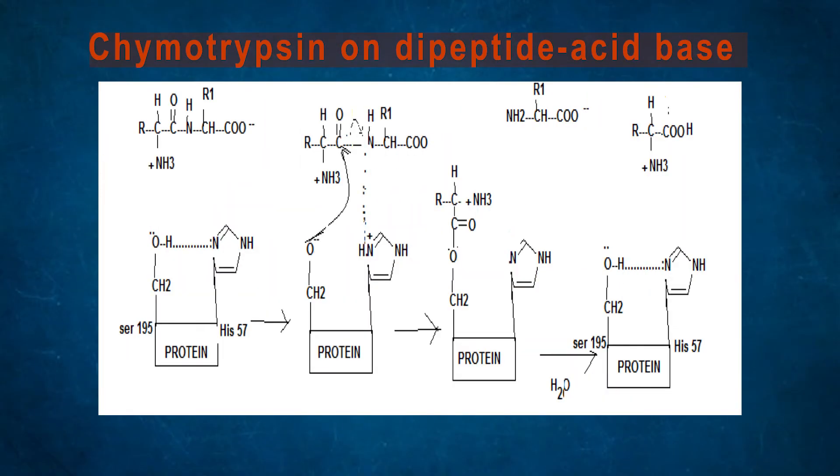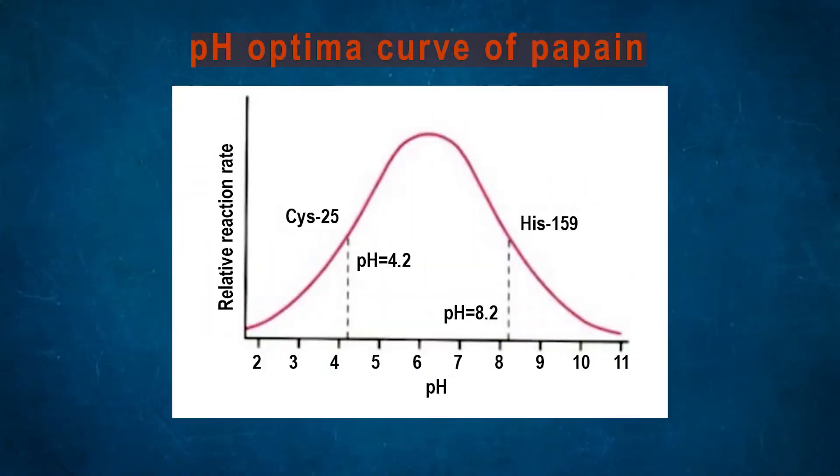This is the general acid-base mechanism performed by RNase. Some reaction mechanisms at enzyme active sites: a proposed mechanism for the action of chymotrypsin on dipeptide. It is once again an acid-base reaction. The enzyme papain is active only when these ionic groups are present as the thiolate and imidazolium ion pair, happening within pH 4 to 8.